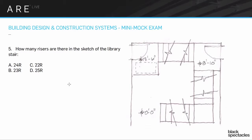Our situation here is we have to figure out the number of risers. The stairwell goes from the 0'0" elevation up to the 8'10" elevation where there's a door, and then it continues up to the 13'6" elevation where there's another door. So our first consideration is going from 0'0" up to 8'10".